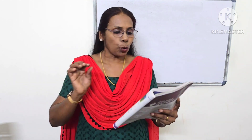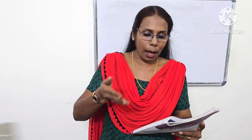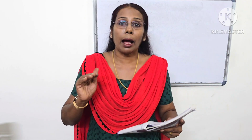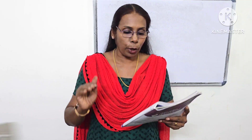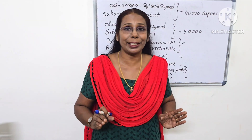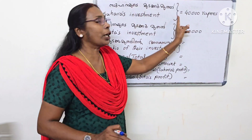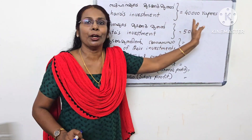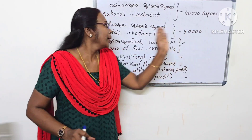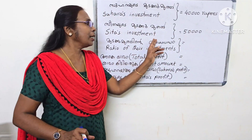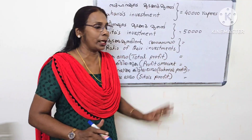Suhara's investment is 40,000 rupees and Sida's is 50,000 rupees. The ratio of their investments is 4 to 5. Suhara's investment is 40,000 rupees, so the ratio is 4 is to 5.